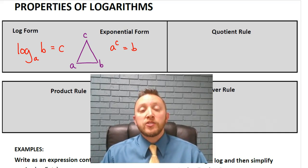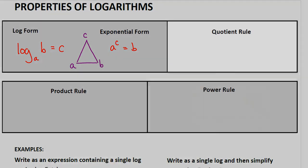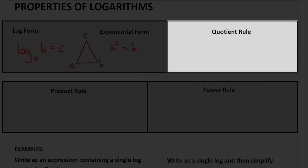So, let's go ahead and look at our first rule, the quotient rule. With the quotient rule, here we have the log base a of a quantity m divided by n. We could break that up to be the log base a of m minus the log base a of n. Because when we were dealing with exponents and dividing with the same base, we subtracted the exponents. Remember, logarithms are our exponents.